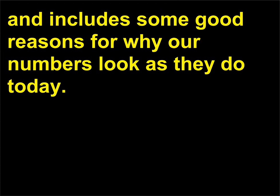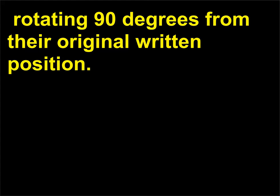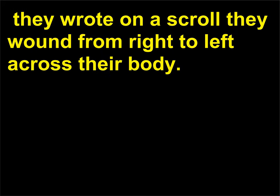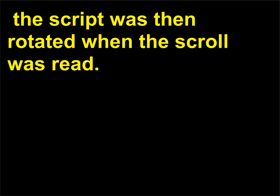The evolution includes some good reasons for why our numbers look as they do today. For example, historians believe that between 970 and 1082, the numbers 2 and 3 changed significantly, rotating 90 degrees from their original written position. This is thought to be due to how scribes worked, sitting cross-legged. They wrote on a scroll wound from right to left across their body, which caused them to write from top to bottom, not our usual left to right. The script was then rotated when the scroll was read.